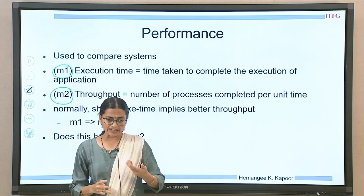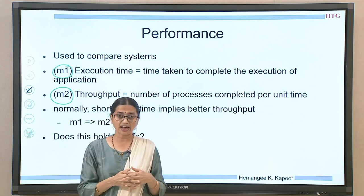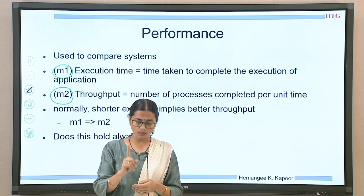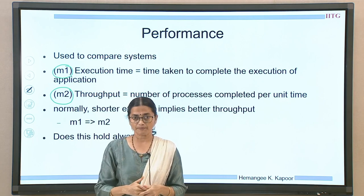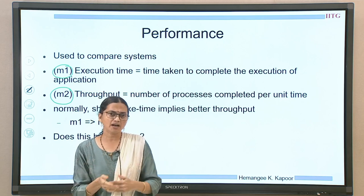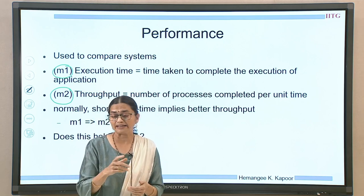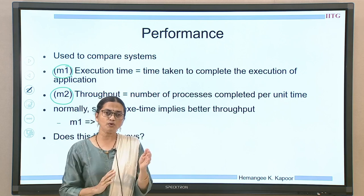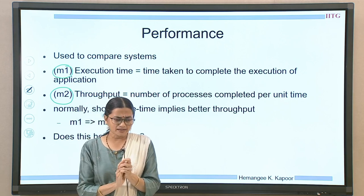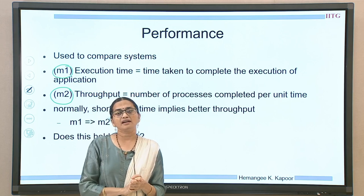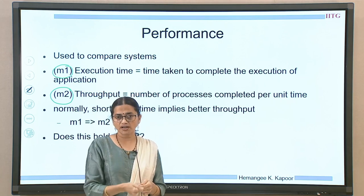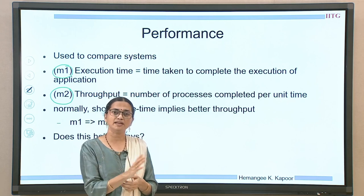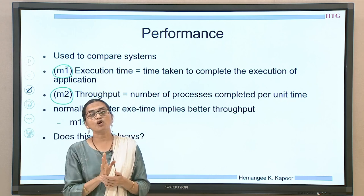If you recollect, in a pipeline processor we had good throughput because potentially we were able to complete one instruction every clock tick. So the throughput would be good, but the execution time or the latency per instruction could be a little higher. With these two metrics M1 and M2, it is intuitive that if I have a shorter execution time, I would also have better throughput — M1 implies M2. But does this always hold?